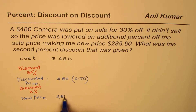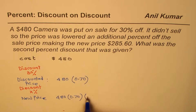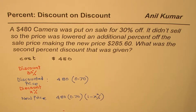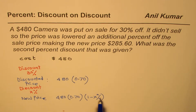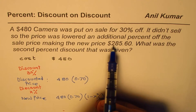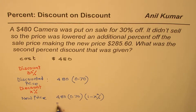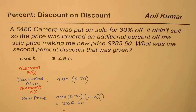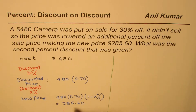The new price should be 480 times 0.70 times (1 minus X percent). That is how we get our equation, and this price is given to us as $285.60. So: 480 × 0.70 × (1 − X%) = 285.60. That is our approach to solve — we get one equation and from there we can find the answer.